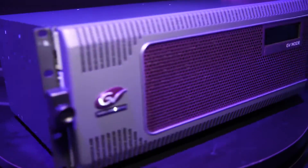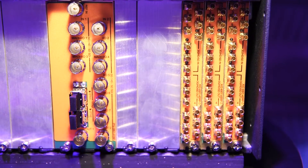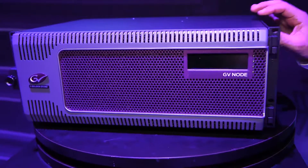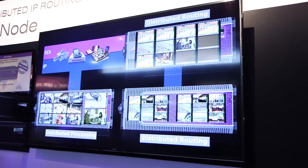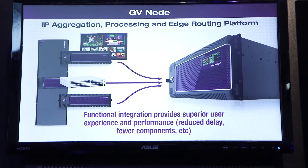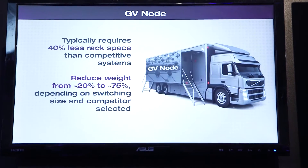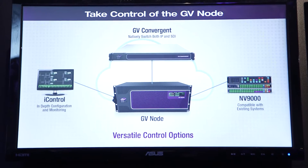GvNode is a very good transitional product in the sense that most of the equipment in the field right now is SDI based, where everybody's trying to move to IP to get more flexibility and to have format-agnostic signal processing. With GvNode, it handles both SDI and IP inputs and outputs, and aggregates those all onto a common fabric, so you can switch between IP sources and SDI destinations, or SDI sources and IP destinations. By bringing all of the processing capabilities into the fabric of the GvNode, all the external cabling is eliminated, and it simplifies the system significantly.